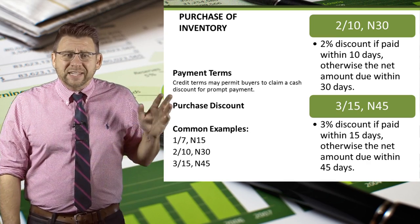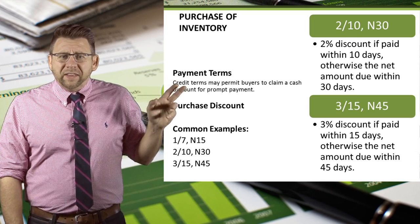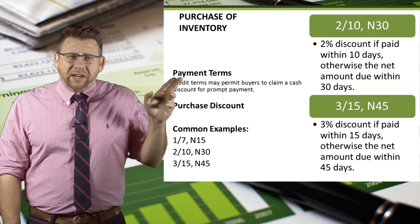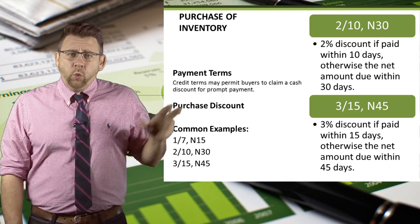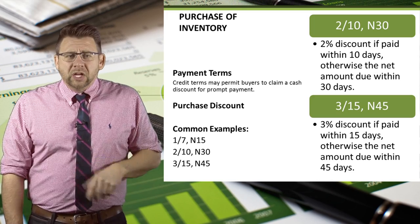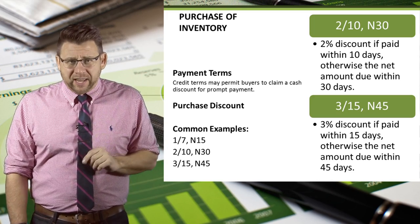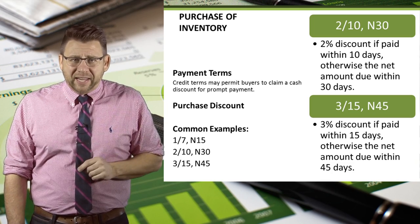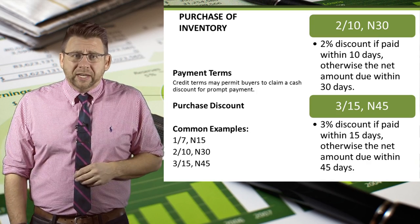Here you can see some common types of payment terms. We read these like this: 2/10 net 30, 3/15 net 45, 1/70 net 15. So 2/10 net 30 means a 2% discount if the payment is made within 10 days; otherwise, the net amount is due in 30 days.